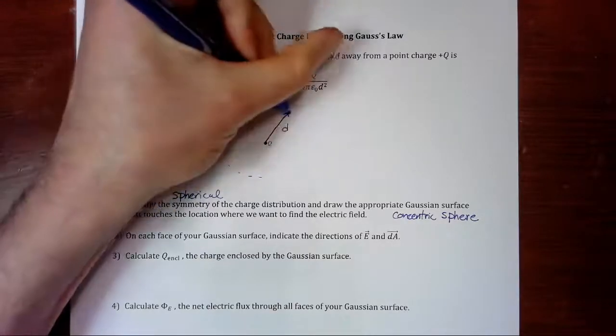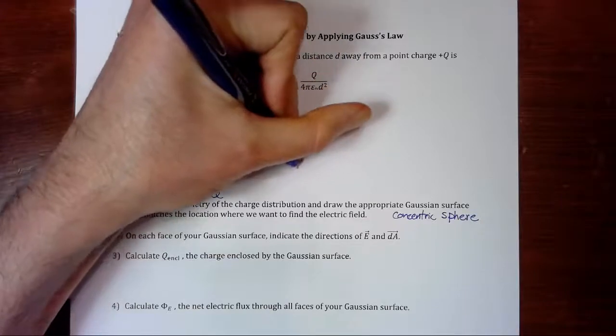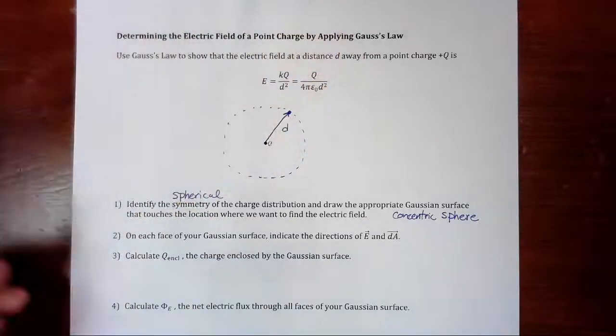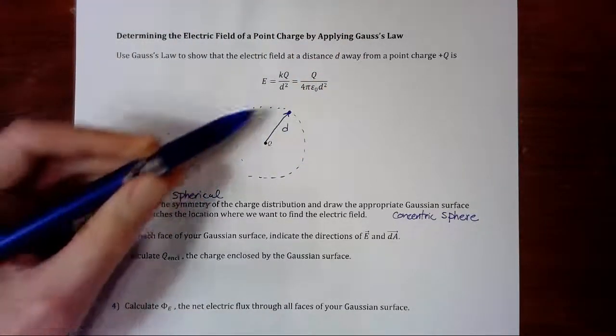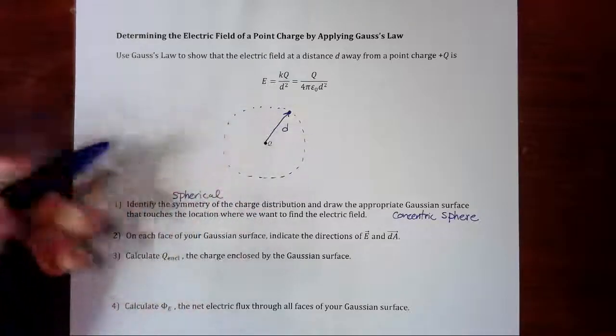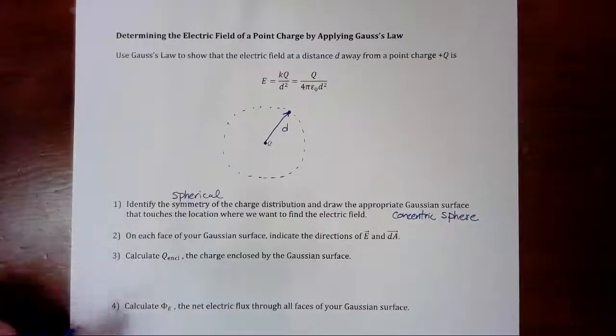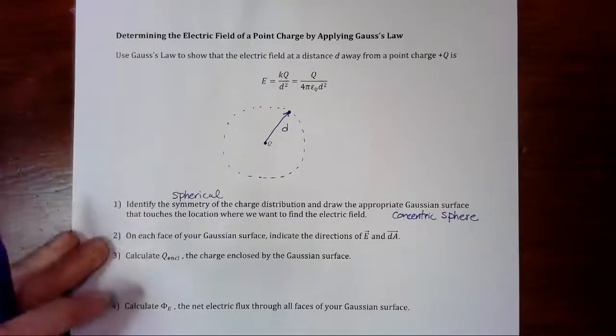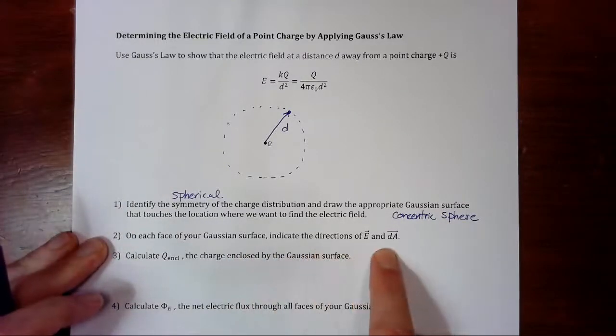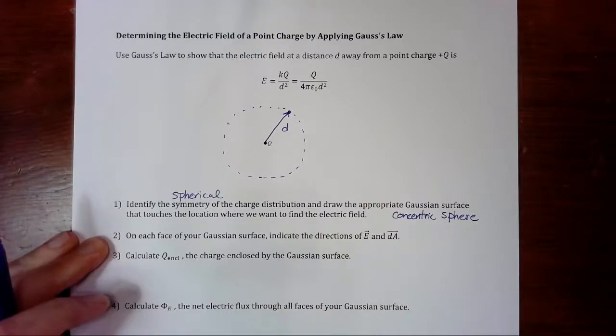This is not a very good circle, but you get the picture. There we go. There's our Gaussian sphere. This is in three dimensions, so it's an entire sphere. On each face of your surface, indicate the directions of E and dA. Well, the sphere really only has one face.